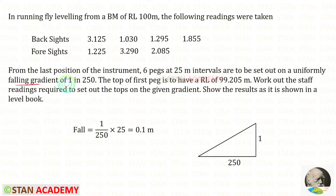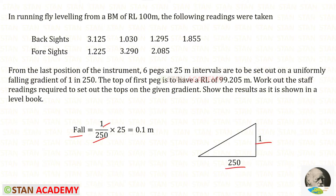The falling gradient is given as 1 in 250 — one vertical, 250 horizontal. Since it is a falling gradient between the last six readings, there will be only fall. We can find the fall very easily between two consecutive readings. For 250 it is one, but we need the fall for 25 meter. Multiplying accordingly, we get the fall between two individual readings as 0.1 meter.